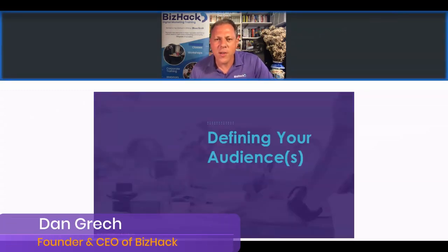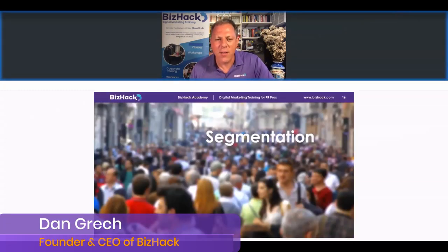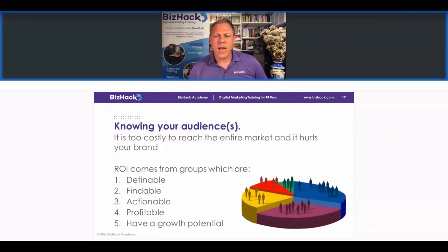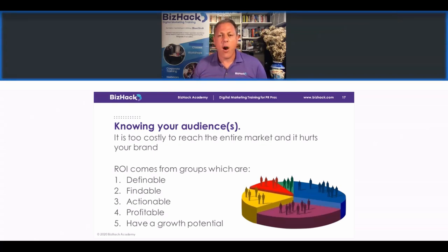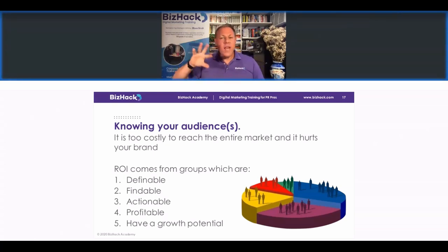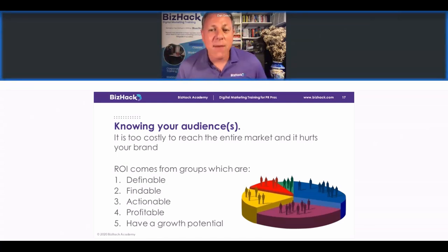First, a little Marketing 101 — defining your audience. What marketers call figuring out your ideal audience, they call segmentation. It's really a fancy way of talking about knowing who your audiences are. You're going to get a return on investment from audiences that are definable, findable, actionable, profitable, and have growth potential. That 29-to-1 return on investment I mentioned is a direct result of getting in front of the ideal target audience.